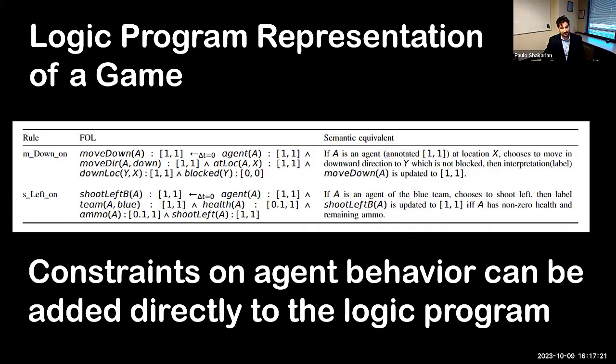First thing you need is a logic program representation of a game. Here we have some examples from the paper showing that if an agent at location x chooses to move in a direction that's not blocked, then the move down atom is then updated to be true. We have a whole bunch of rules like this that can be used to represent the game. In the paper, we created the rules ourselves, but these rules can be learned from data.